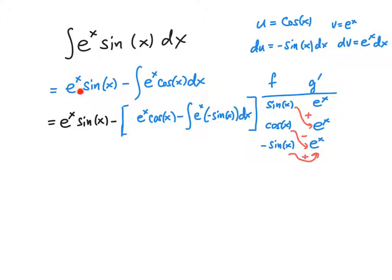So this part of the integral is done: e to the x sin x. I'll just highlight that in black and there's this minus sign parked outside. Now I'm going to perform integration by parts again on e to the x cosine x. So if I do that, I'll let u be cosine x, so du is minus sine x. Here's cosine x, here's the minus sine x. And then the anti-derivative of e to the x is e to the x. So uv is e to the x cosine x and v du is e to the x minus sine x. And then the integration by parts formula has a minus sign in there.